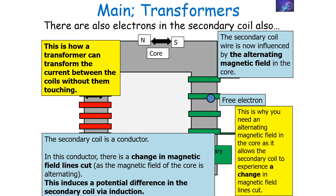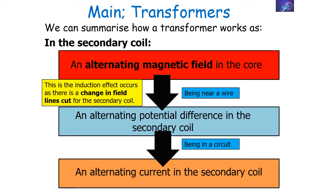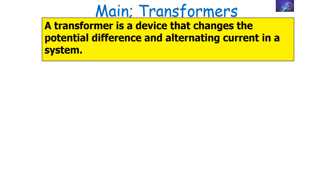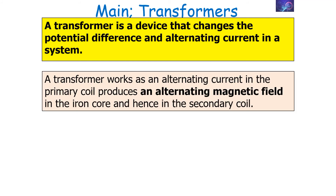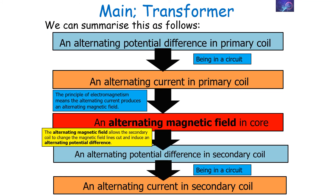That's how a transformer transfers current between the primary and secondary coil without them touching. In the primary coil, an alternating potential difference produces an alternating current, which leads to an alternating magnetic field in the core. In the secondary coil, this alternating magnetic field induces an alternating potential difference because you're changing how many field lines pass through that secondary coil, which then leads to an alternating current when it's part of a complete circuit. A transformer is a device that changes the potential difference of alternating current in a system.